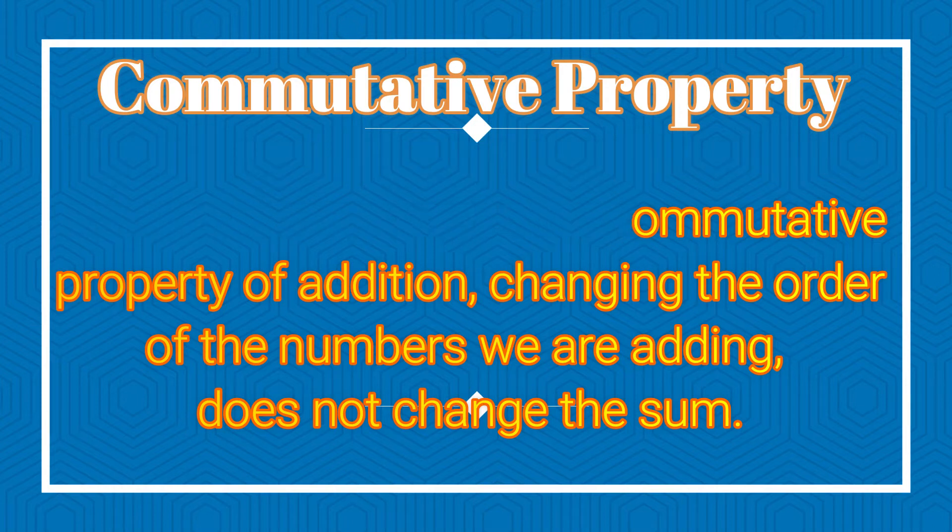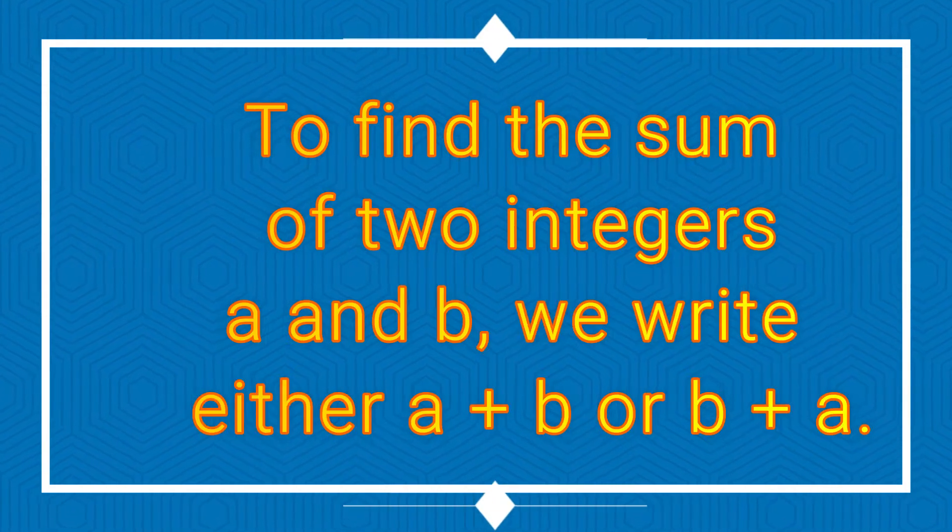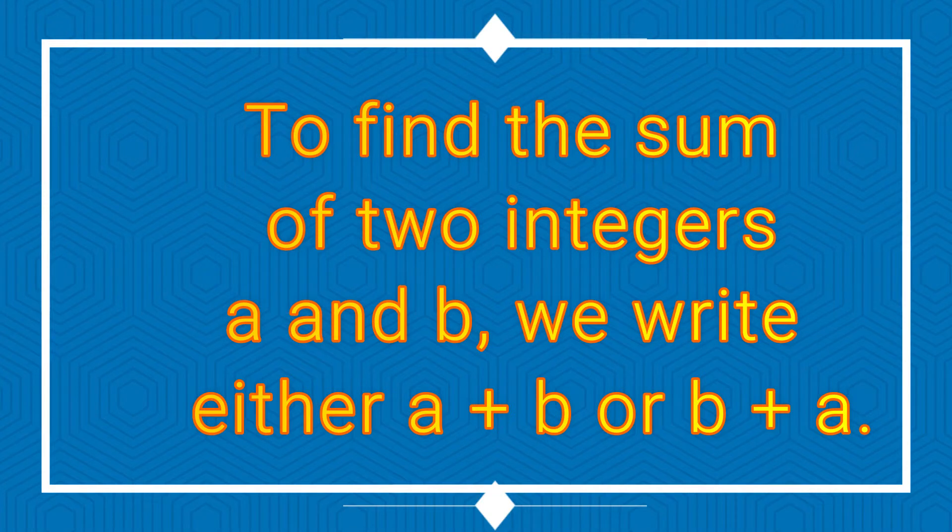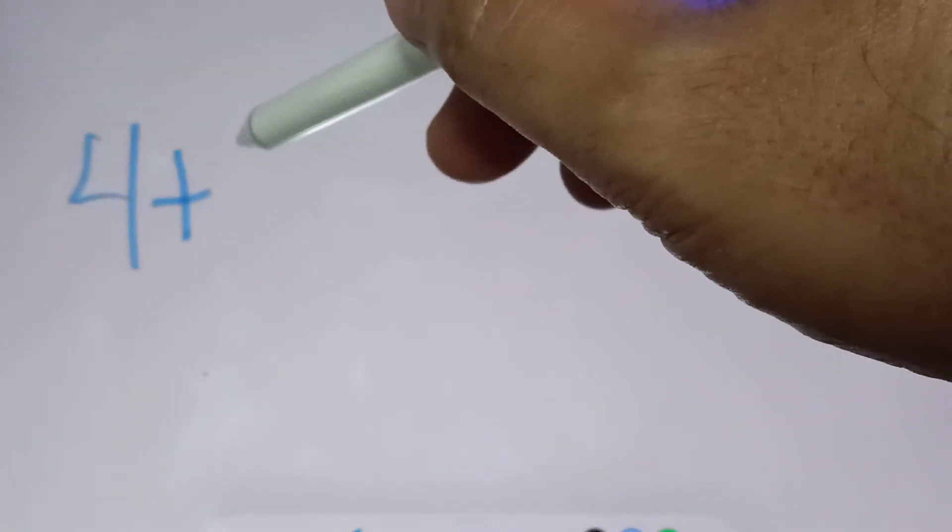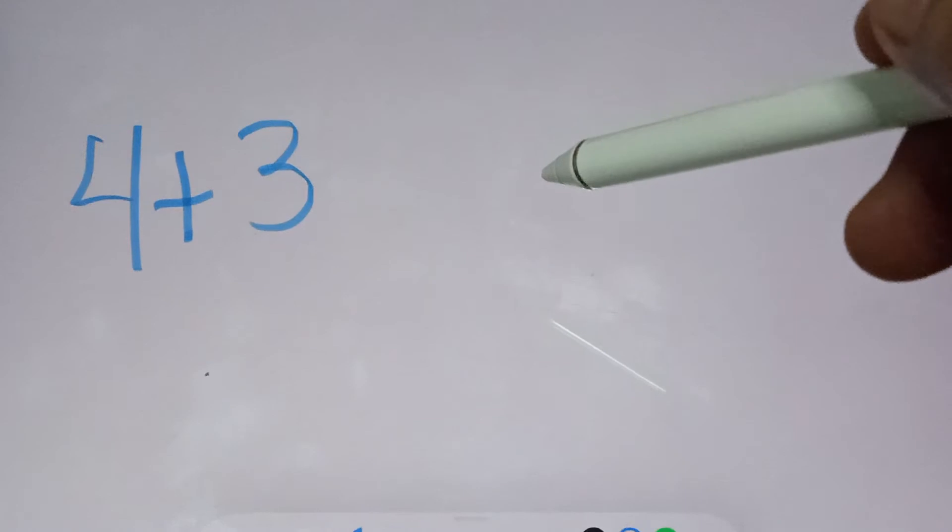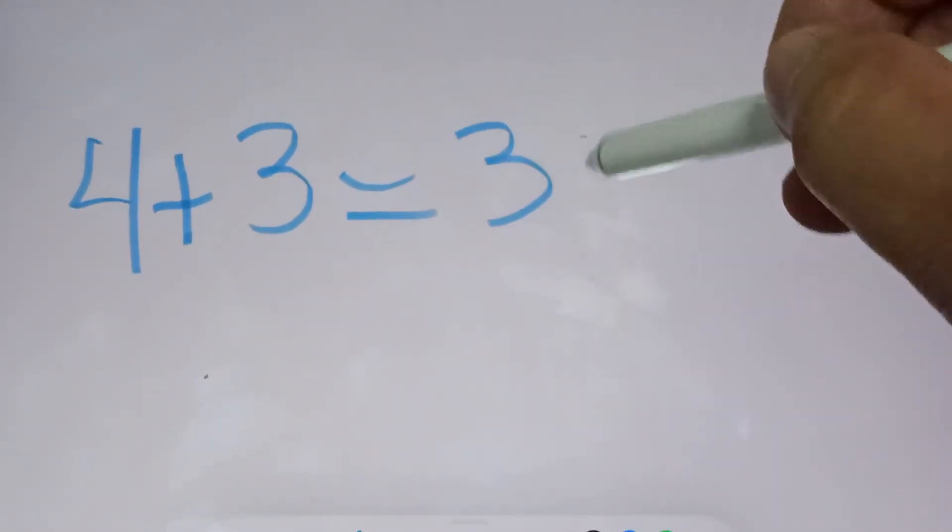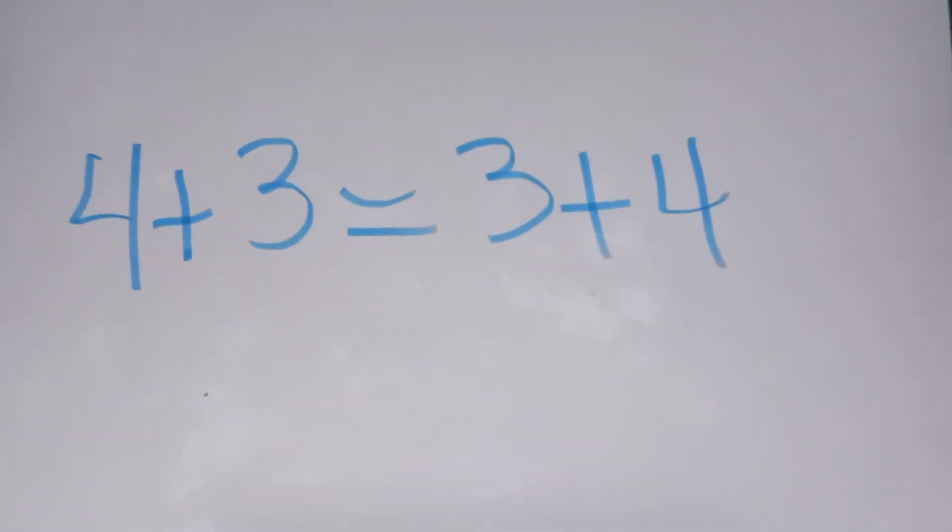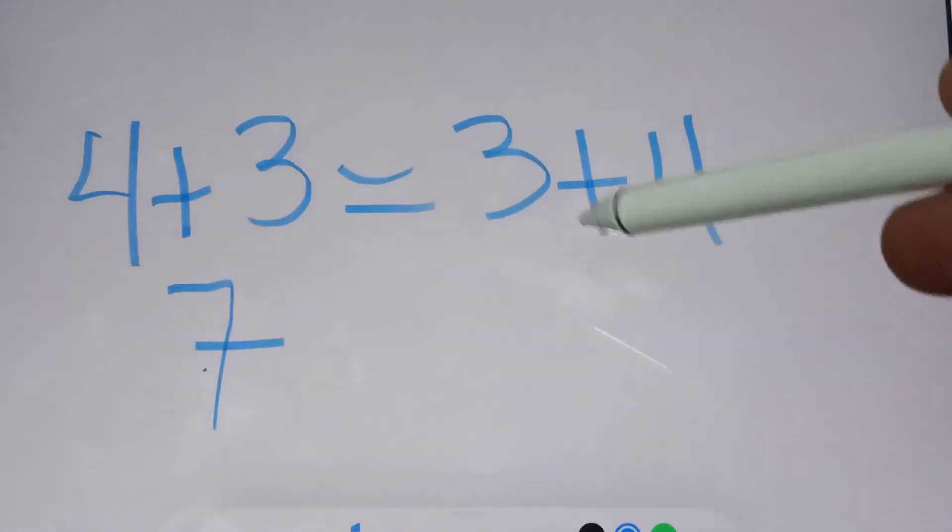To find the sum of two integers, a and b, we write either a plus b or b plus a. So, for example, if you have 4 plus 3, which is the same as 3 plus 4. So, 4 plus 3 is 7 and 3 plus 4 is 7.